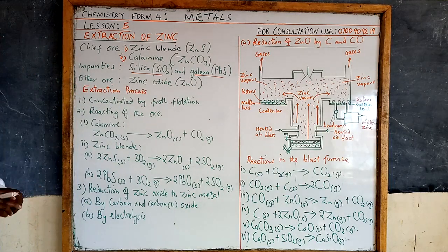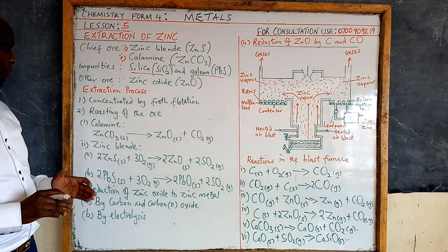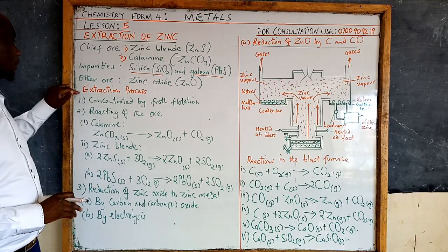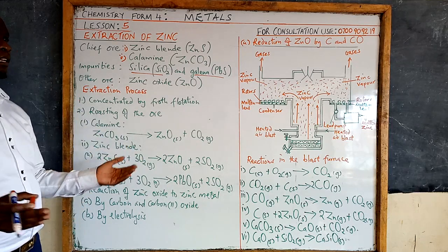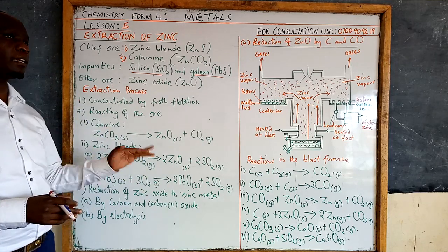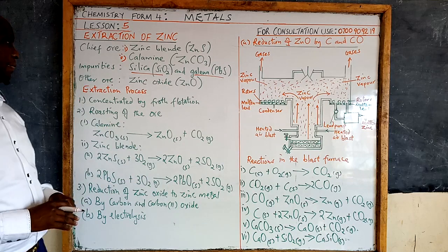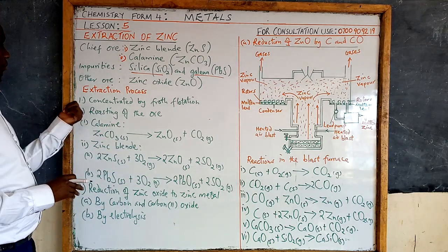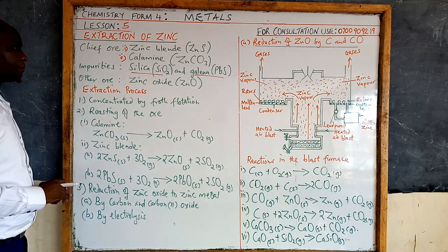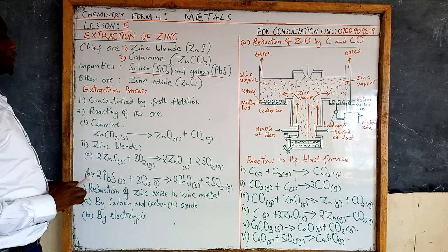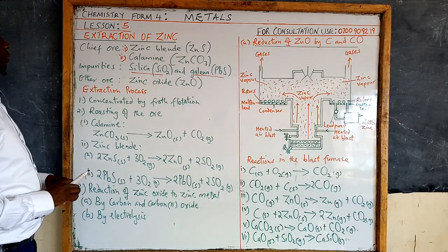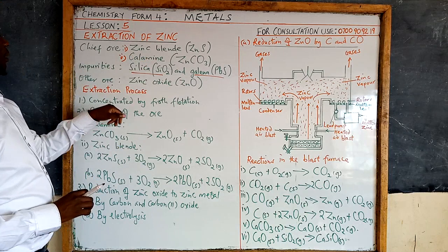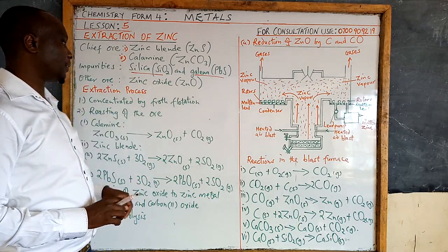The extraction process has four main steps. Omitting the initial stages of mining and removing the earthy materials — which is part of concentration — so froth flotation: we take it from there. The zinc ore, which is either zinc blende or calamine, will be concentrated by froth flotation.